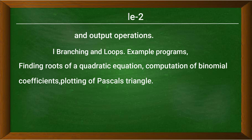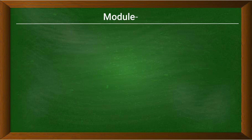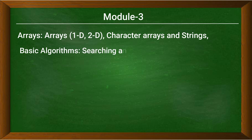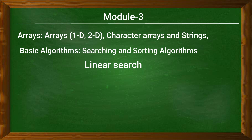In module three we are going to discuss about arrays — what is an array, the different types including one-dimensional and two-dimensional arrays, character arrays and strings, and basic algorithms such as searching and sorting. In searching algorithms we will learn linear search and binary search, and in sorting algorithms we will cover bubble sort and selection sort.